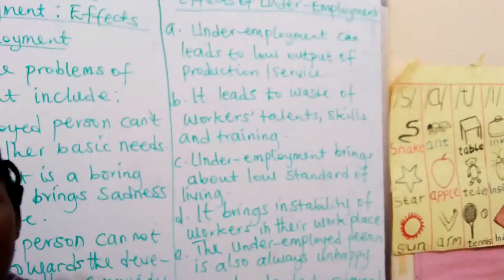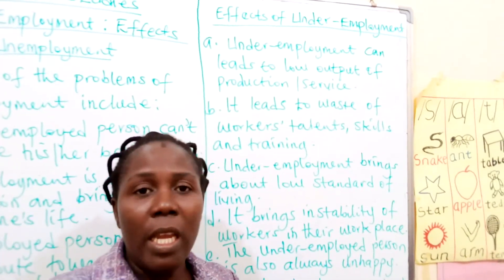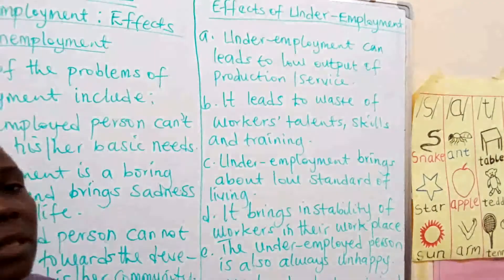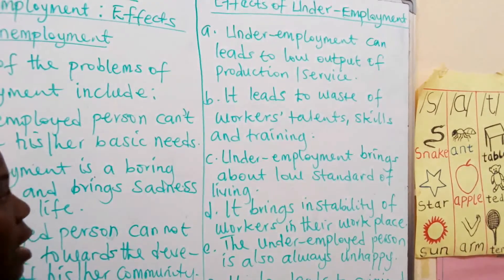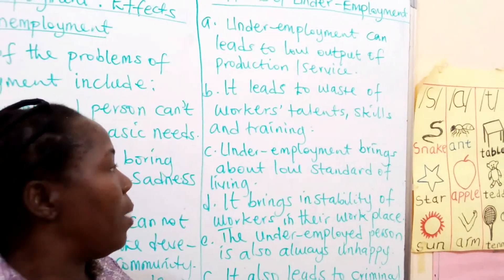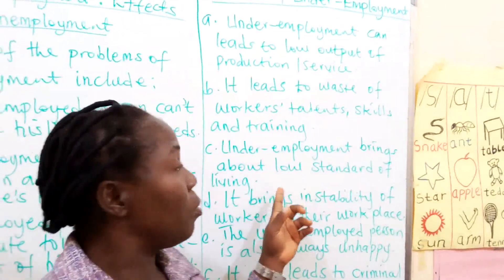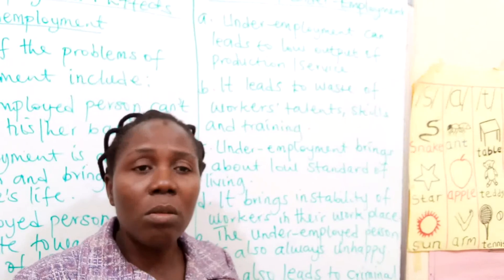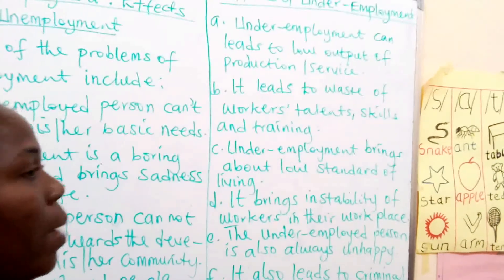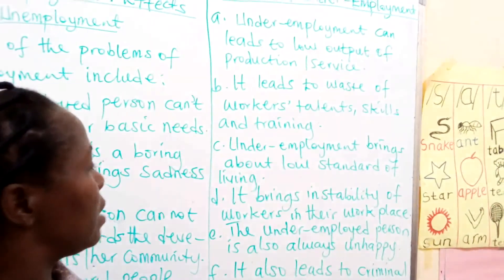The person has been trained for a specific profession, and yet finds himself or herself in another profession they were not trained for. Definitely, it will affect the person's talents and the training received in their field of discipline. Underemployment also brings about low standard of living — this is applicable to unemployment as well. Definitely, a low standard of living sets in, whereby you have a level of life you are supposed to live but because of your low income, you cannot meet up to that level.